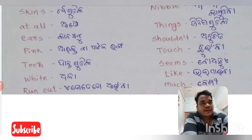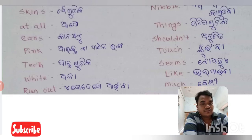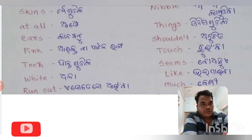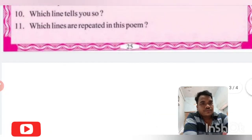'Seems' — S-E-E-M-S — means 'perhaps' or 'appears to be.' 'White' — W-H-I-T-E — is a type of color. So we have solved the difficult words and now we come to discuss those lines.